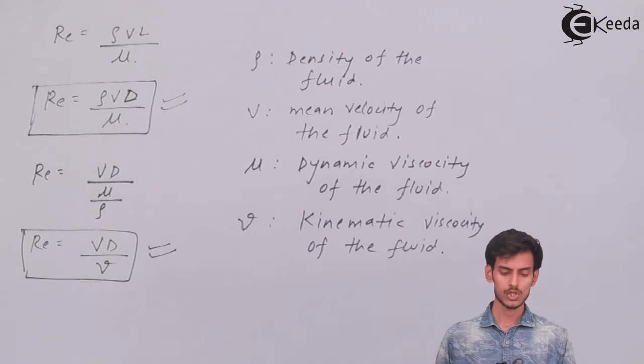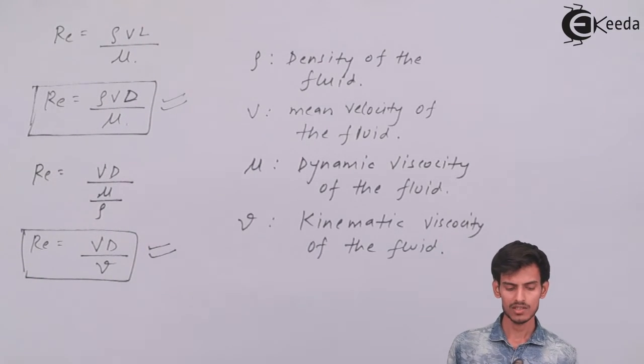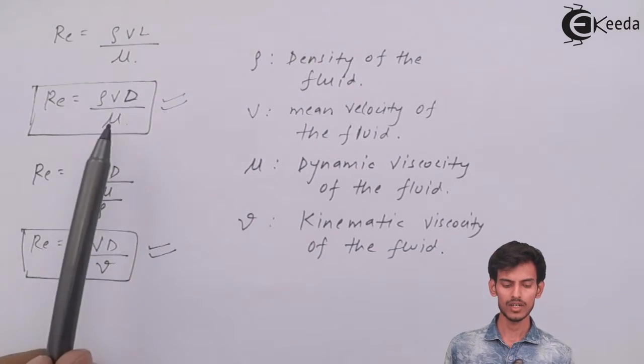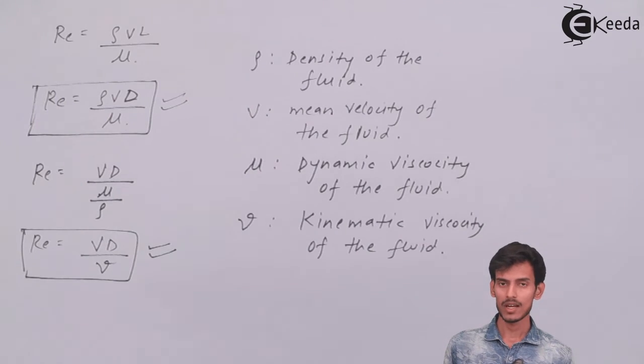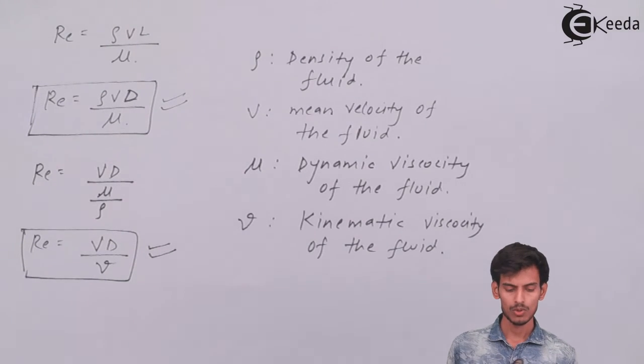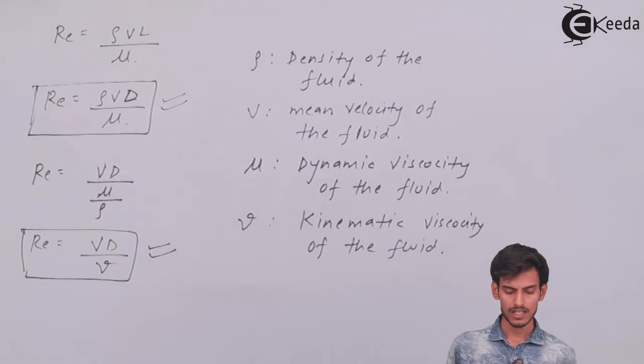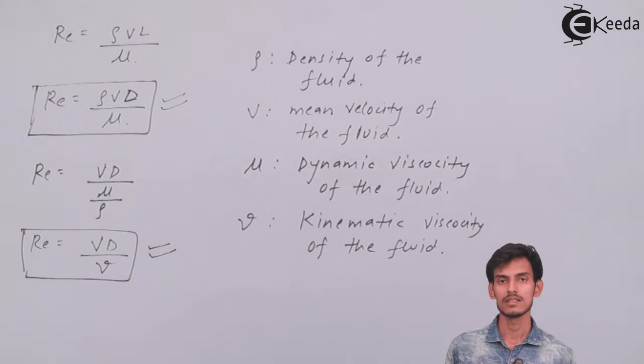Depending on the situation you can use both formulas. If the value of dynamic viscosity is given, use formula 1: ρvD/μ. If the value of kinematic viscosity is given, use vD/ν. You already know about μ and ν from the first chapter, and there's a relation between them. ν is μ divided by ρ, so kinematic viscosity is dynamic viscosity divided by density.